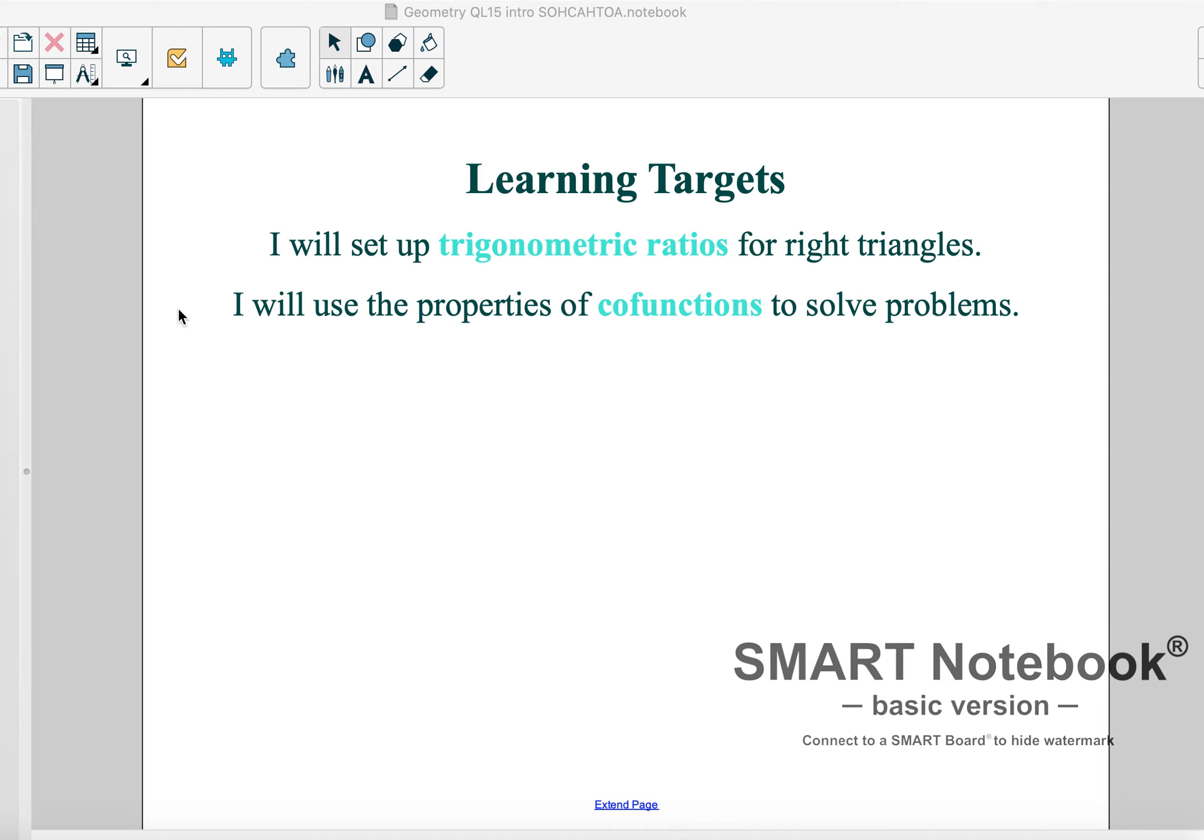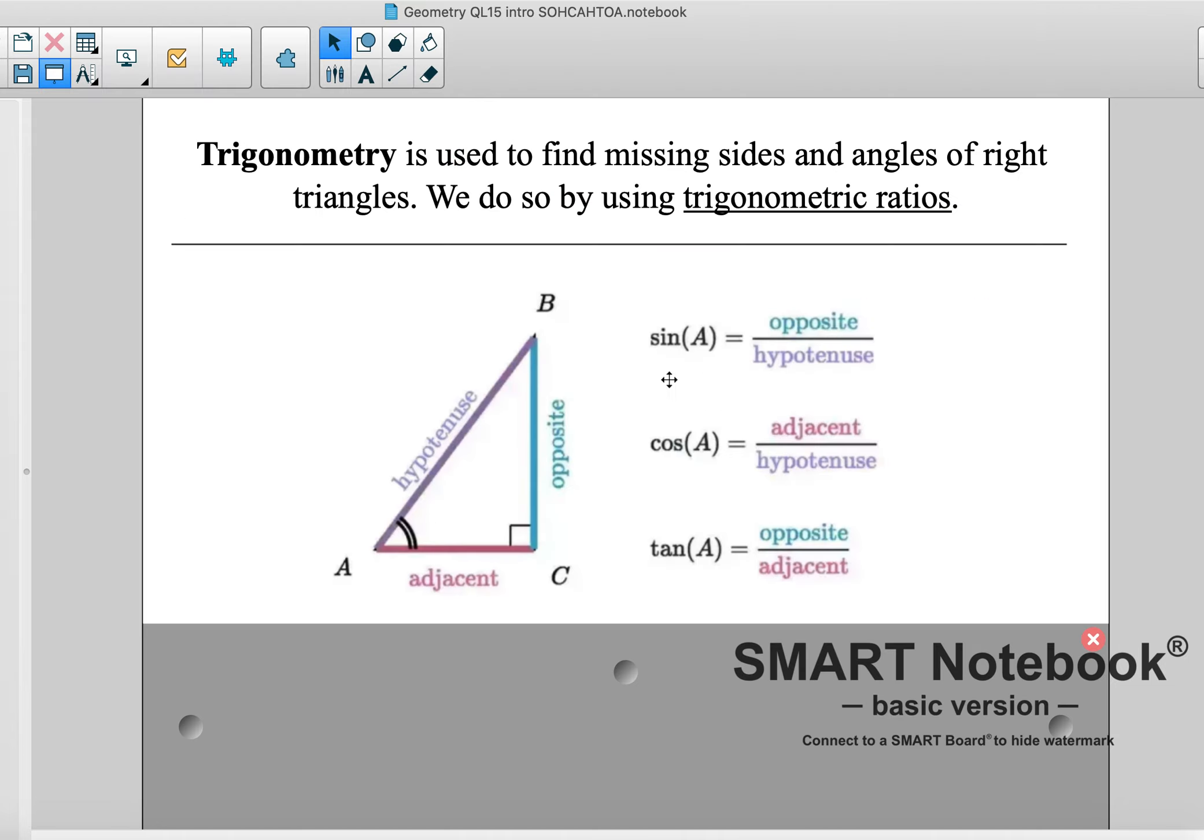So the easiest way to do this is to show you this diagram. Trigonometry is used to find missing sides and angles of right triangles, and we do so by using trigonometric ratios.